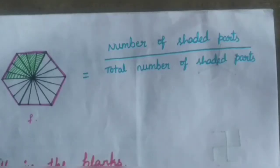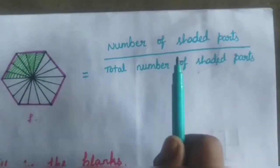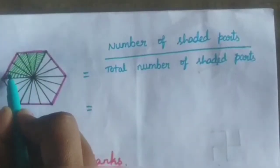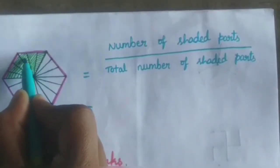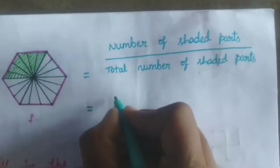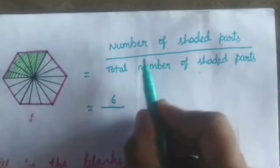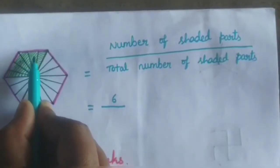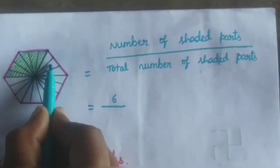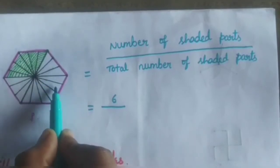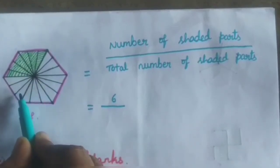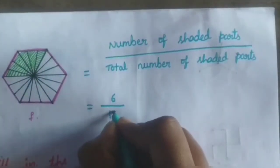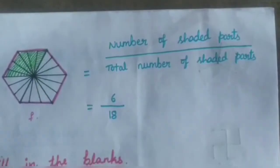Next figure — here also, number of shaded parts goes in the numerator: 1, 2, 3, 4, 5, 6 — so 6 parts are shaded. The total number of equal parts: 1, 2, 3, 4, 5, 6, 7, 8, 9, 10, 11, 12, 13, 14, 15, 16, 17, 18. That means the fraction is 6 by 18.